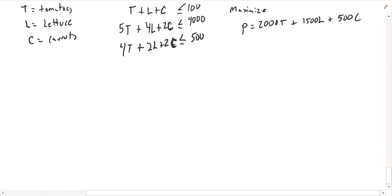All right, so let's put this into a table. It looks like I'm going to need three slack variables, one for each constraint. So my variables are going to be T, L, C, S1, S2, S3, and P.